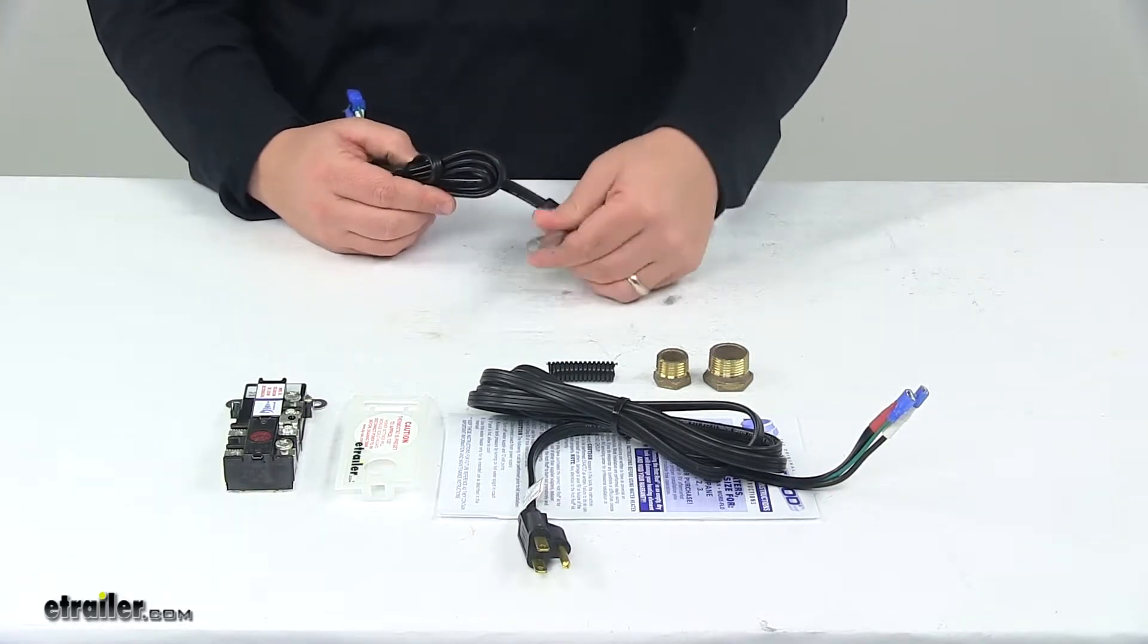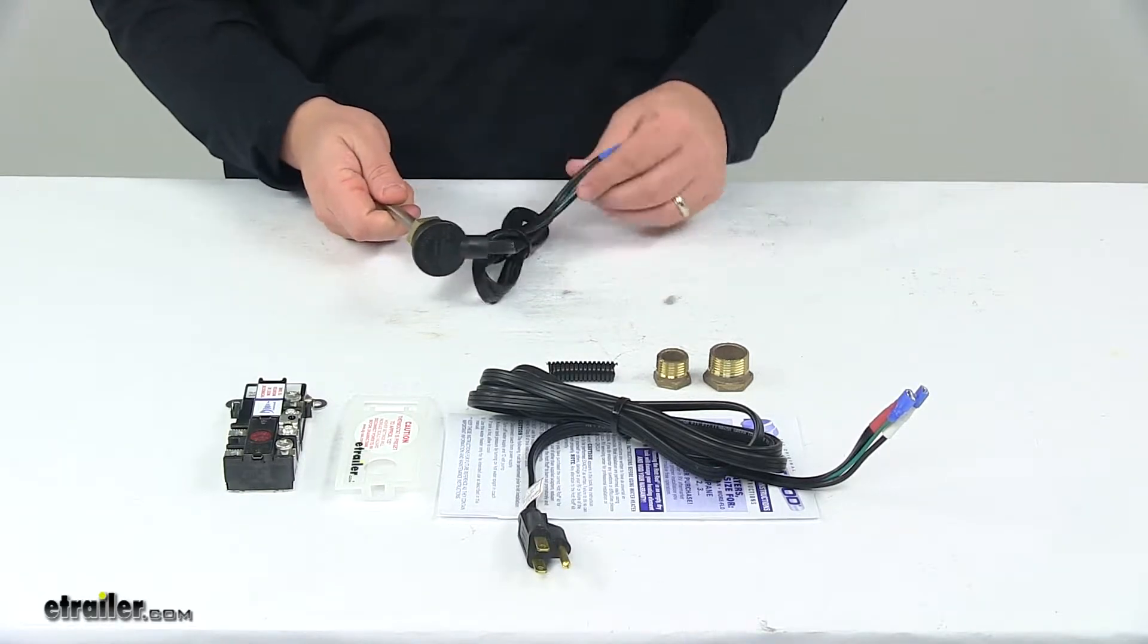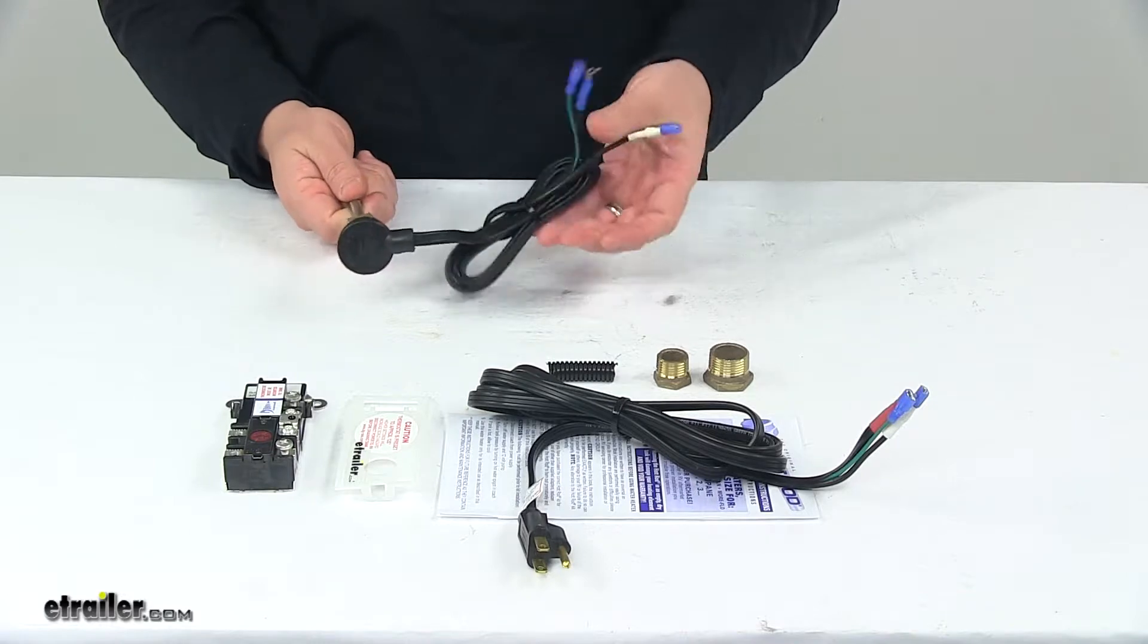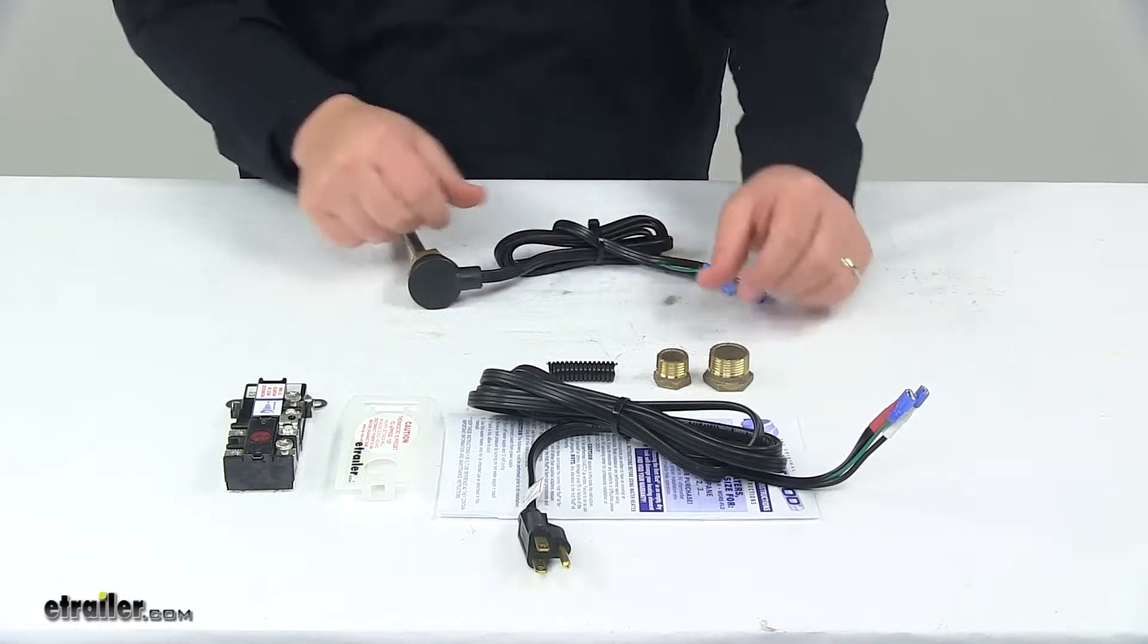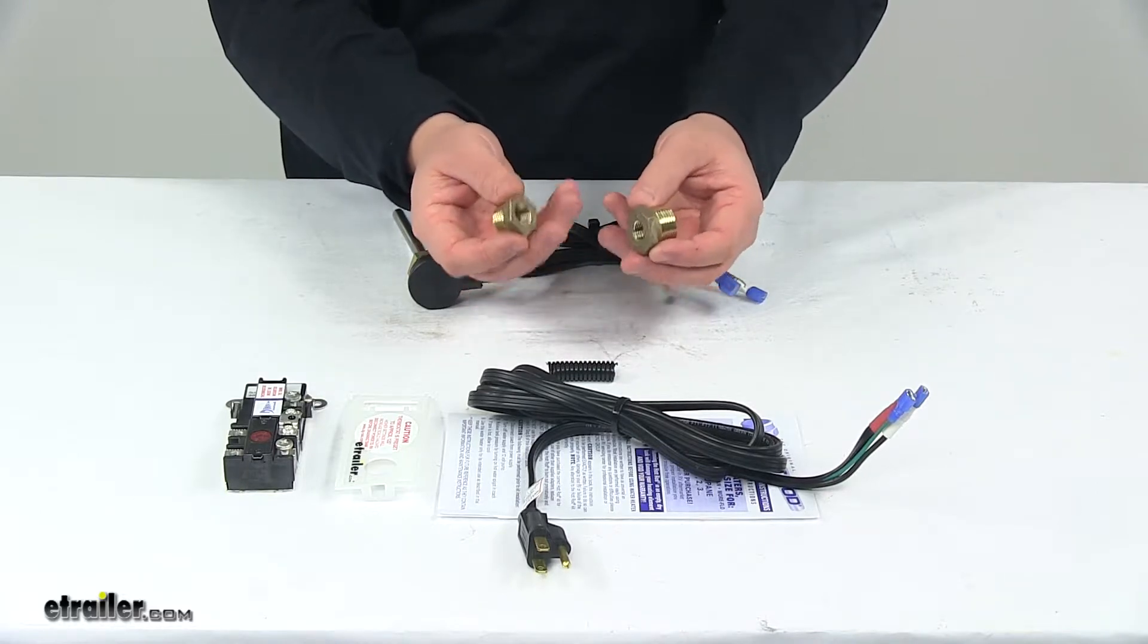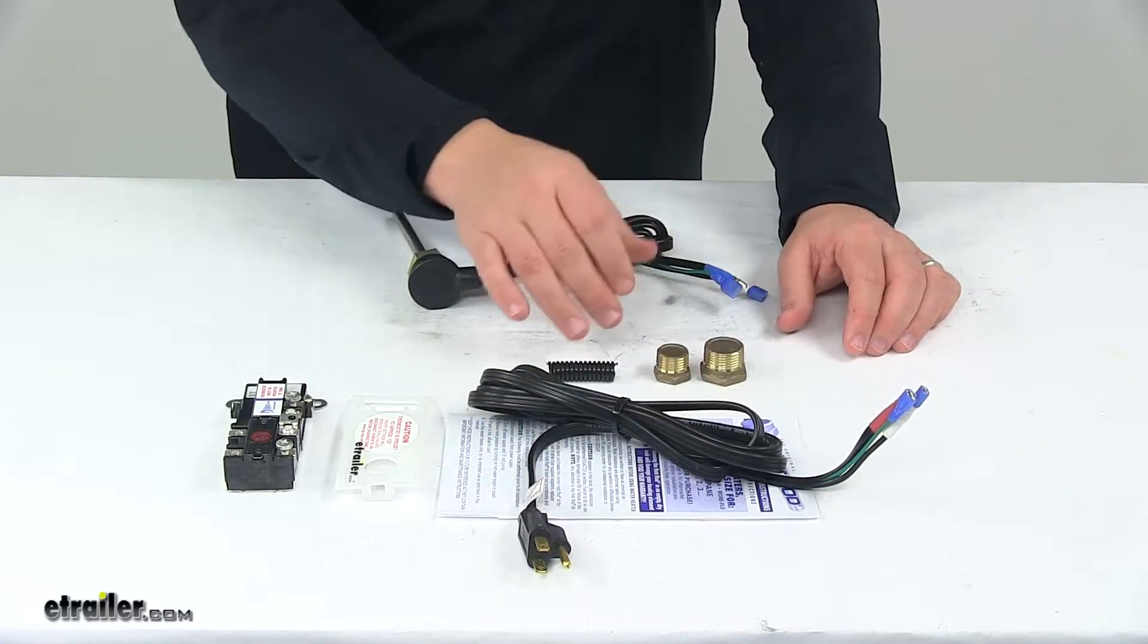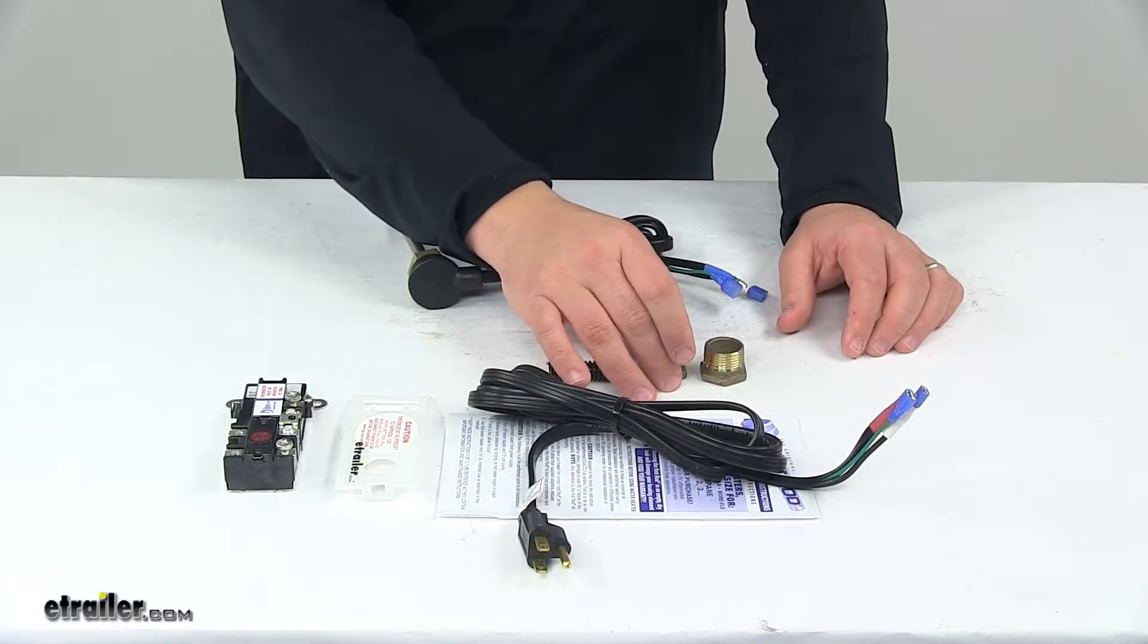This portion right here, this is the rod, plug-in, and the four-foot cord. It comes with two different reducer bushings, so you'll use one of them, and that depends on the brand of your water heater. You want to refer to the included instructions to determine which one to use.